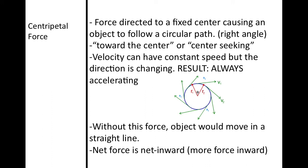With centripetal force, the velocity can have constant speed, but the direction is always changing. An object's inertia wants it to keep going straight, but it gets pulled inward by gravity, tension, or electrical forces. Without those forces, the object would fly off. Because acceleration occurs with a change in direction, we are experiencing constant acceleration — the object is always accelerating in centripetal motion.